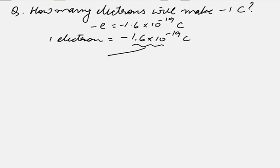Take this quantity to the left side, so we will have 1 divided by 1.6 × 10^-19 electrons, which equals -1 coulomb. So -1 coulomb equals 1 divided by this number times the number of electrons.